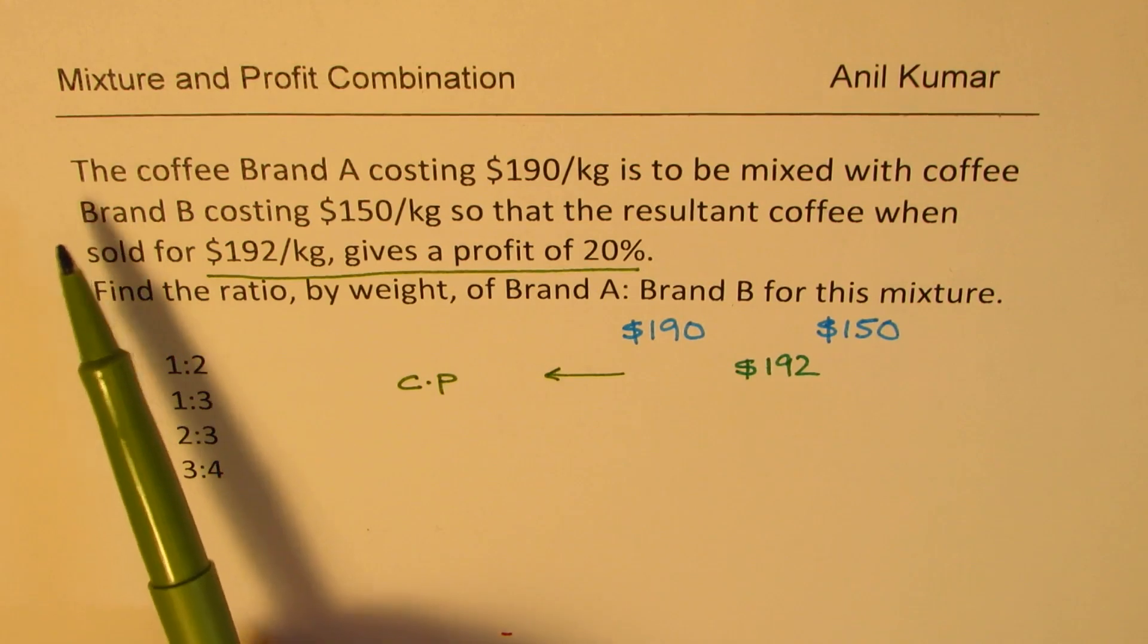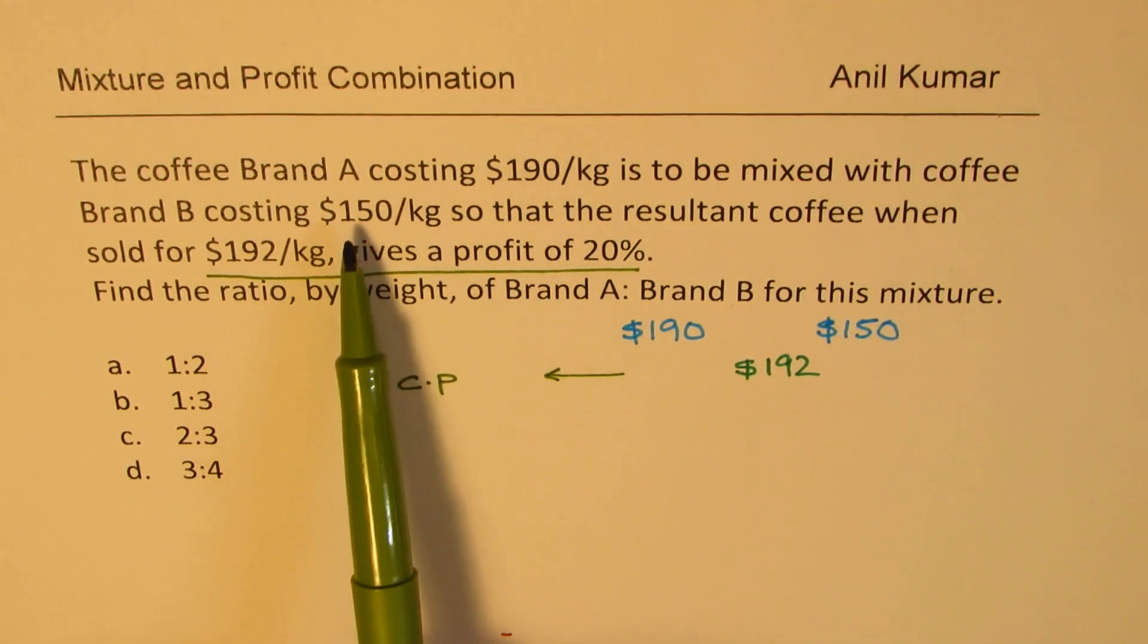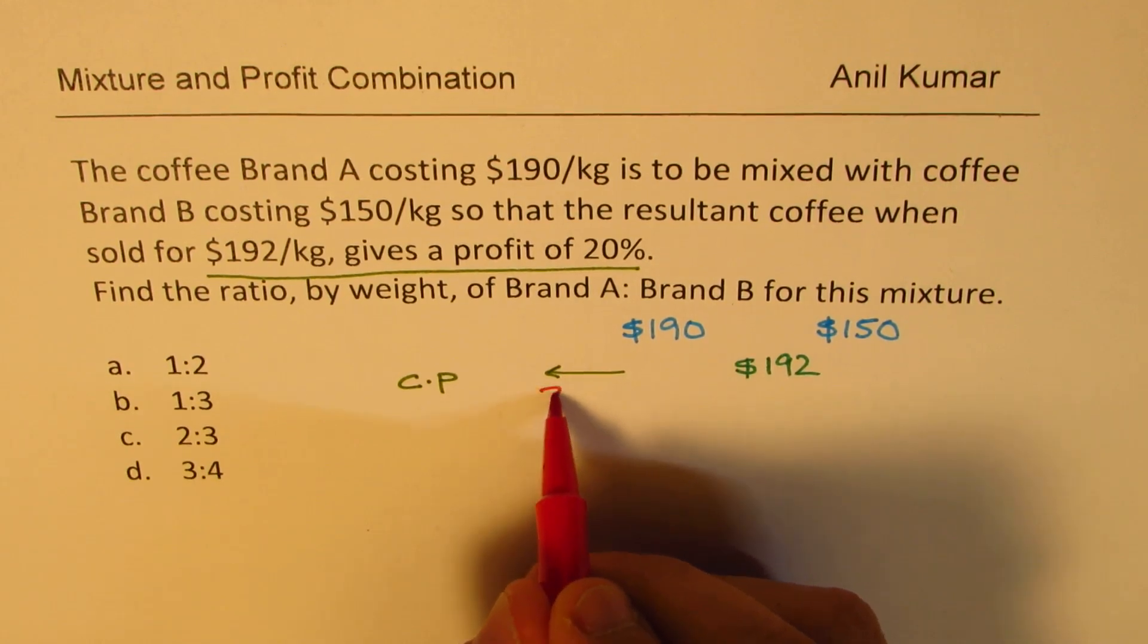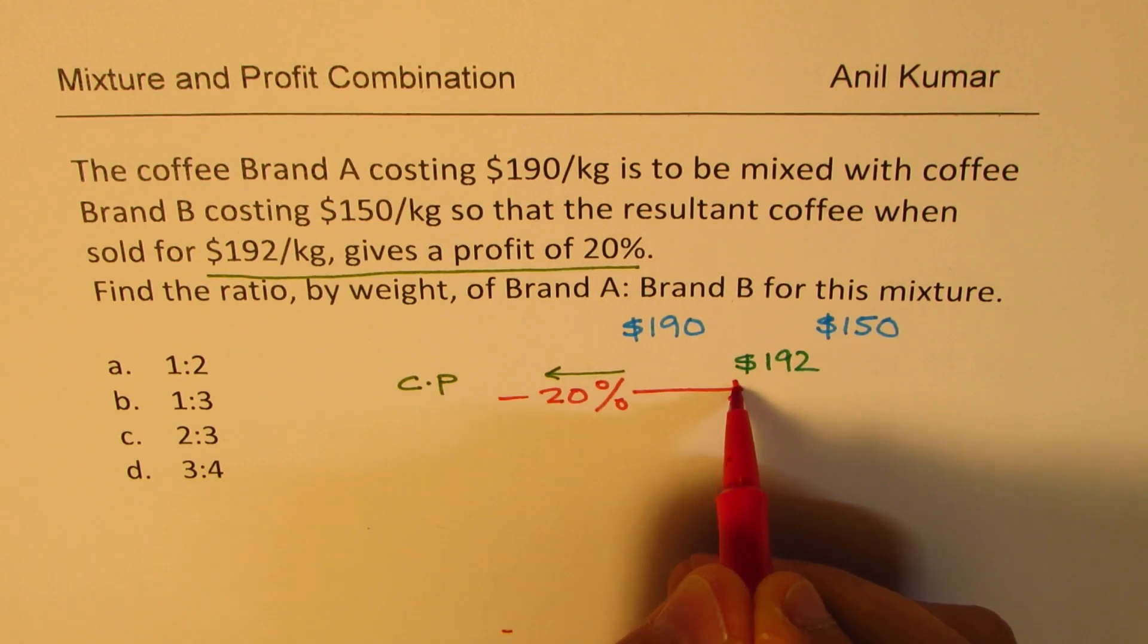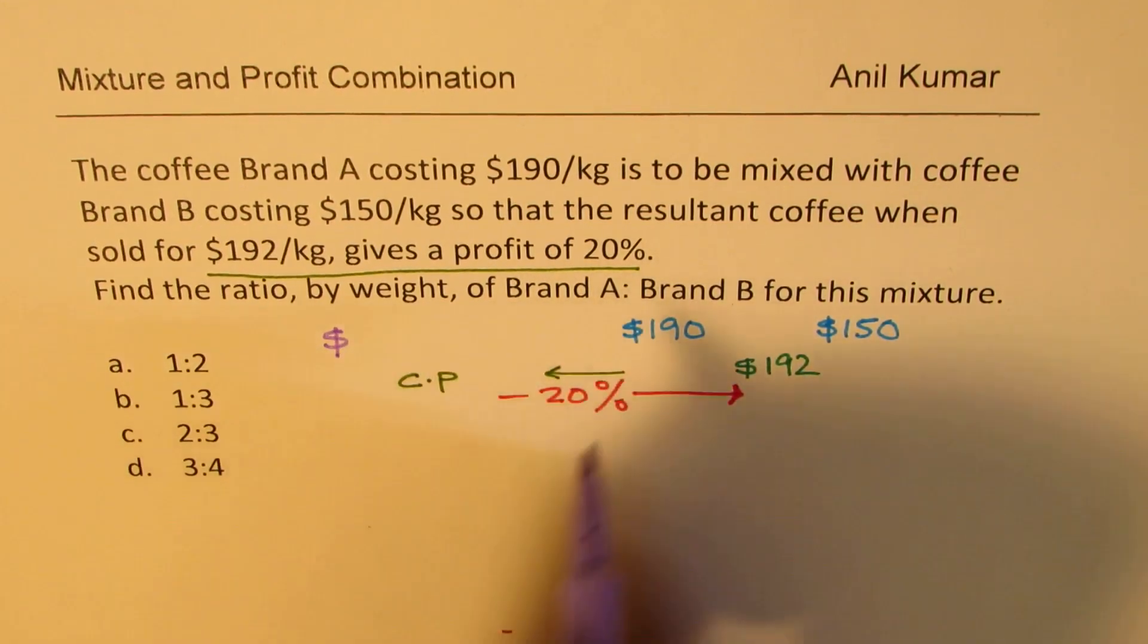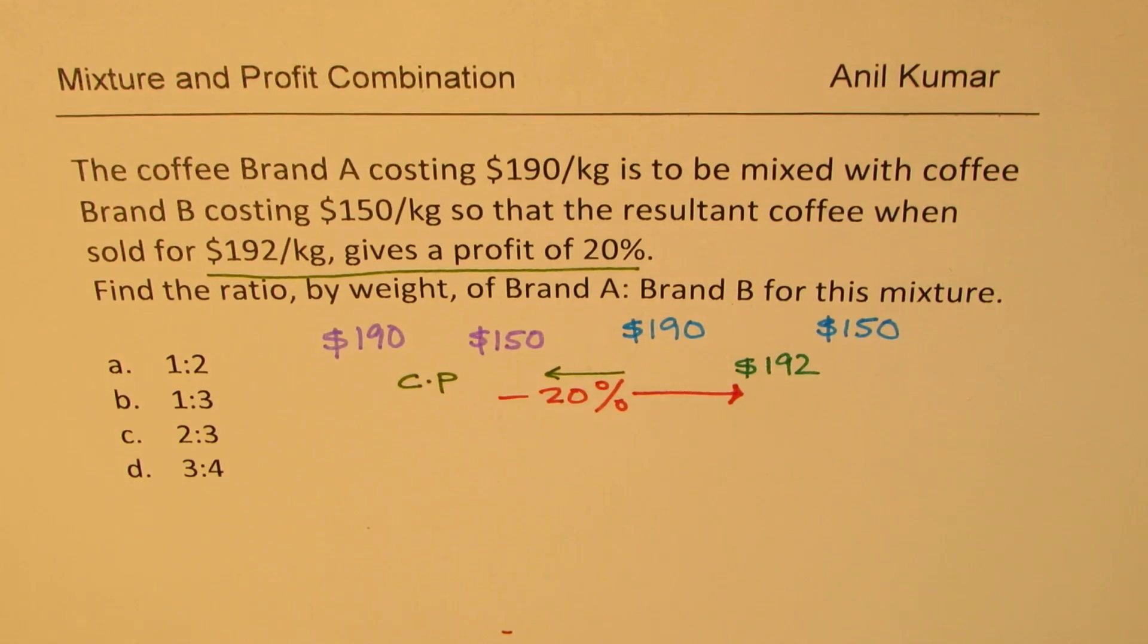If you really look into the question it says coffee brand A costing that much. At this cost you have purchased one coffee brand. At the other cost we have purchased another coffee brand. So basically we really don't know the cost price of the mixture. It is after profit when you add 20% profit, then you get $192. So we need to first find the cost price and then from here we are going to find the ratio.